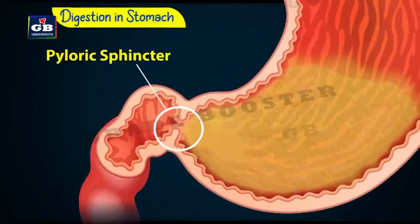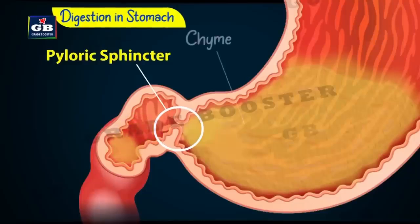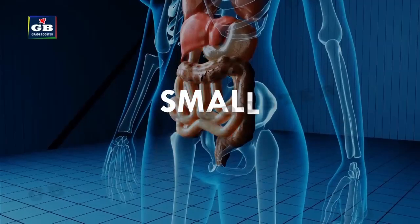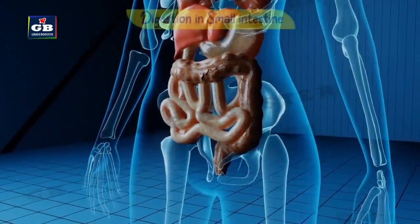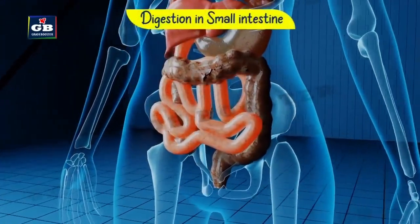At the end of the stomach, there is a muscular sphincter called the pyloric sphincter. This sphincter releases the partly digested food slowly into the small intestine. The small intestine is the longest part of the alimentary canal.